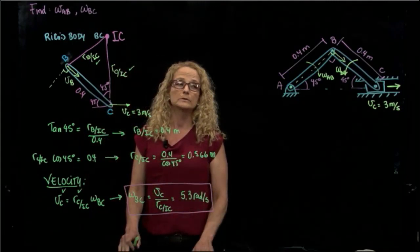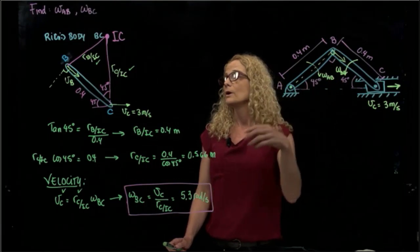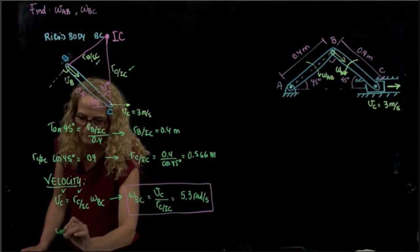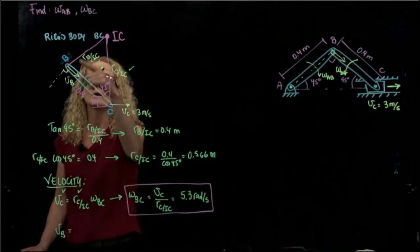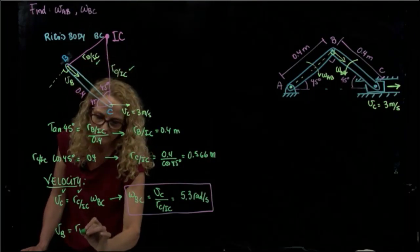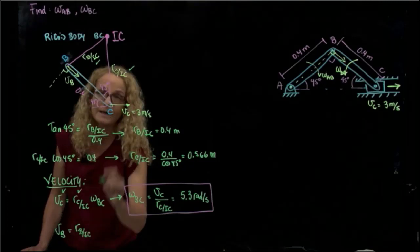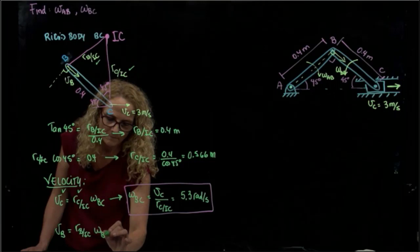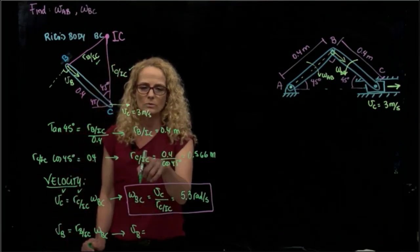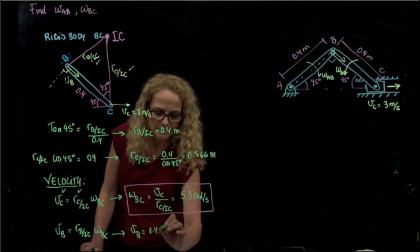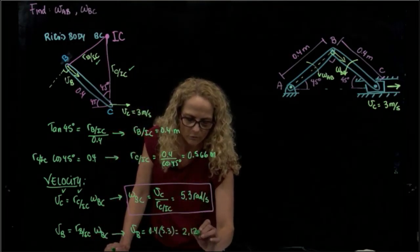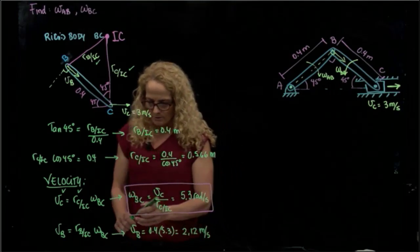The other value we were asked to find is the angular velocity of AB. To find it, I will first find the velocity of B using the distance from the instant center of rotation to B. Since it's the same bar, the velocity of B equals 0.4 times 5.3, so the velocity of B is 2.12 meters per second.